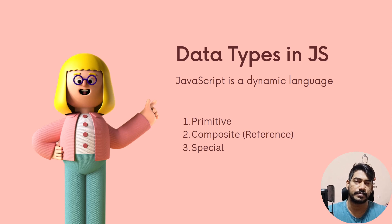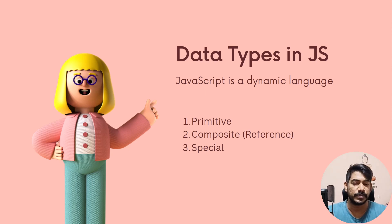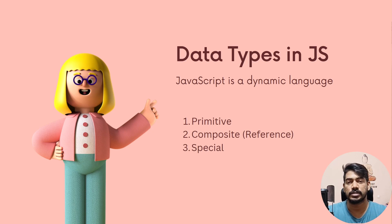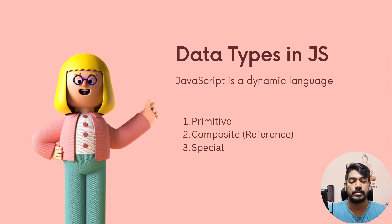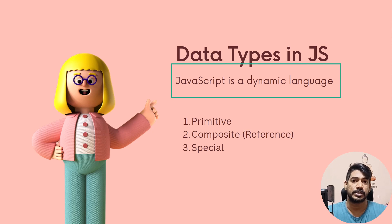In all programming languages there are data types: int, byte, char, string. In JavaScript we have primitive and non-primitive data types. JavaScript also has composite types — that is special. It's a dynamic language, so we'll see a demo of that.